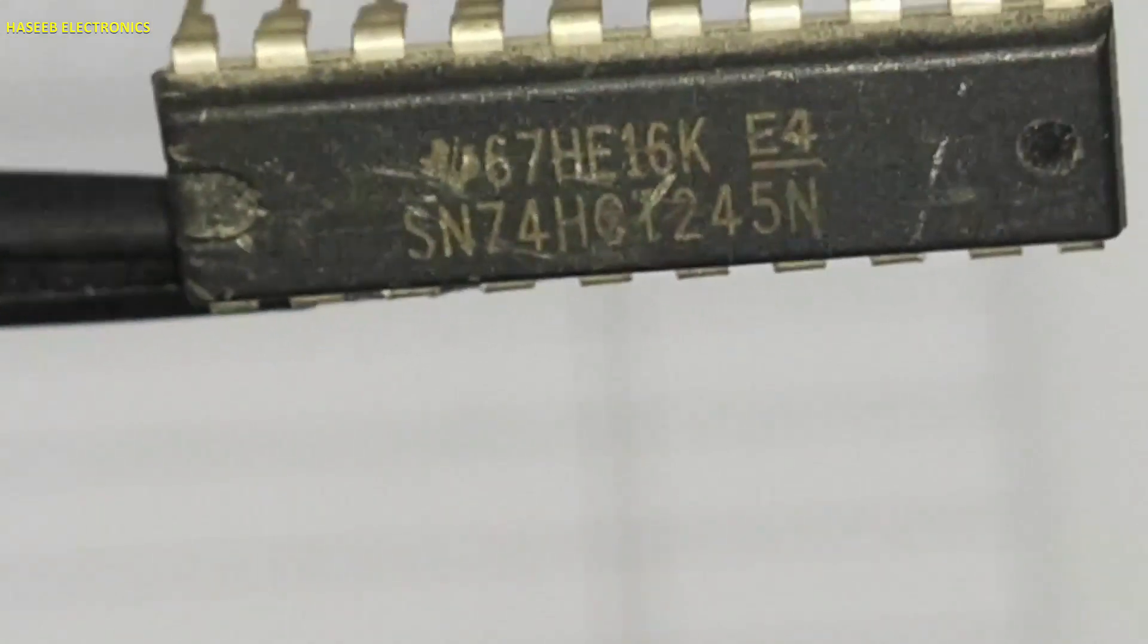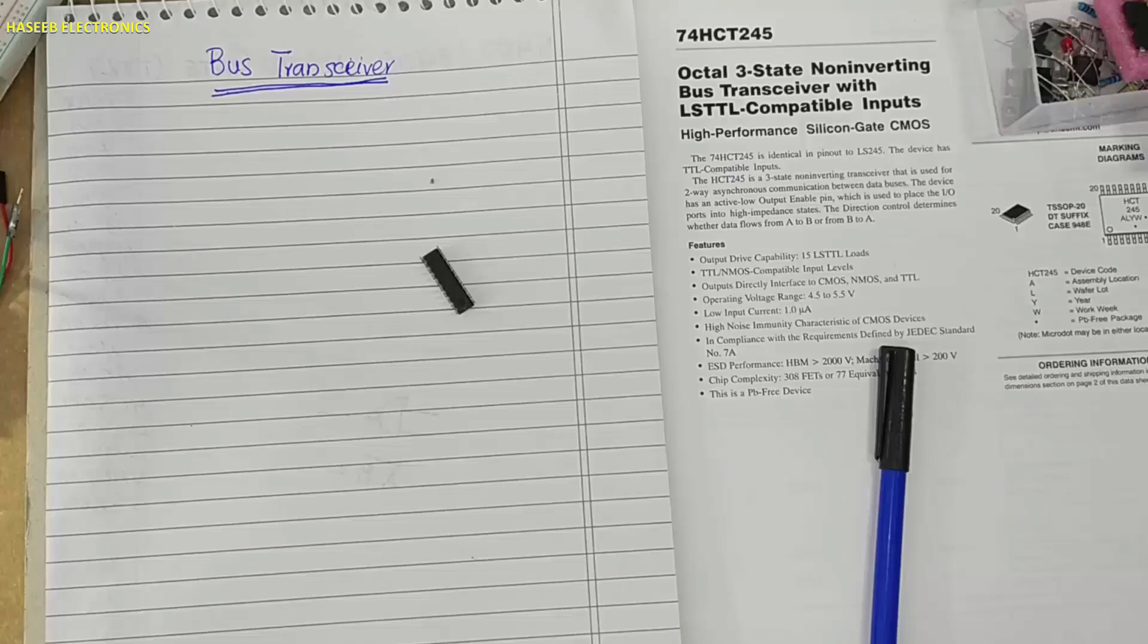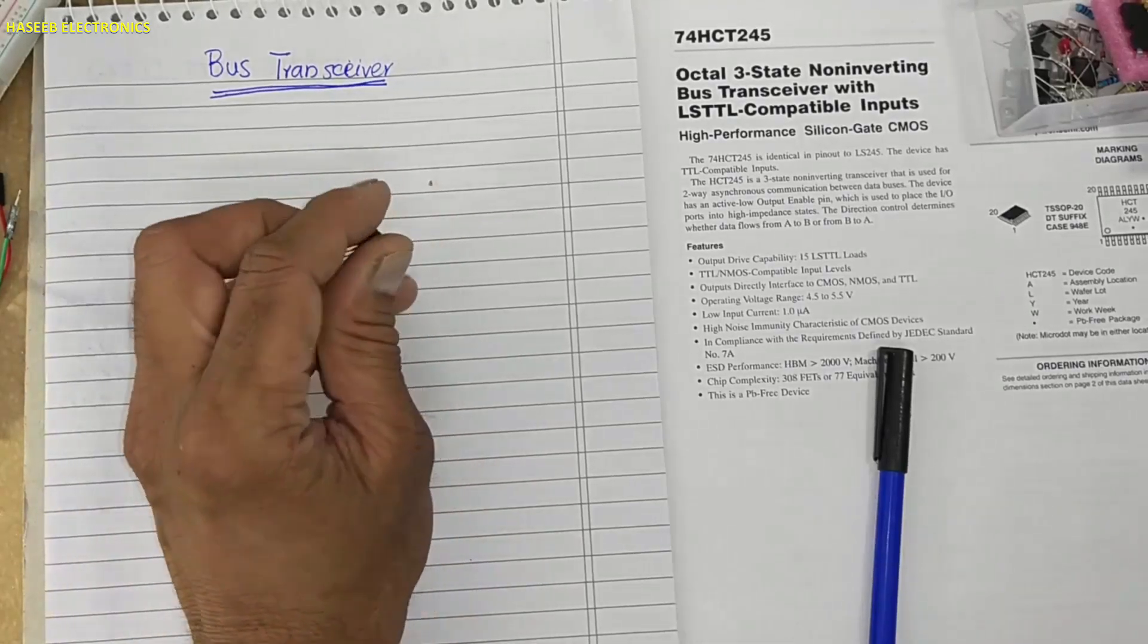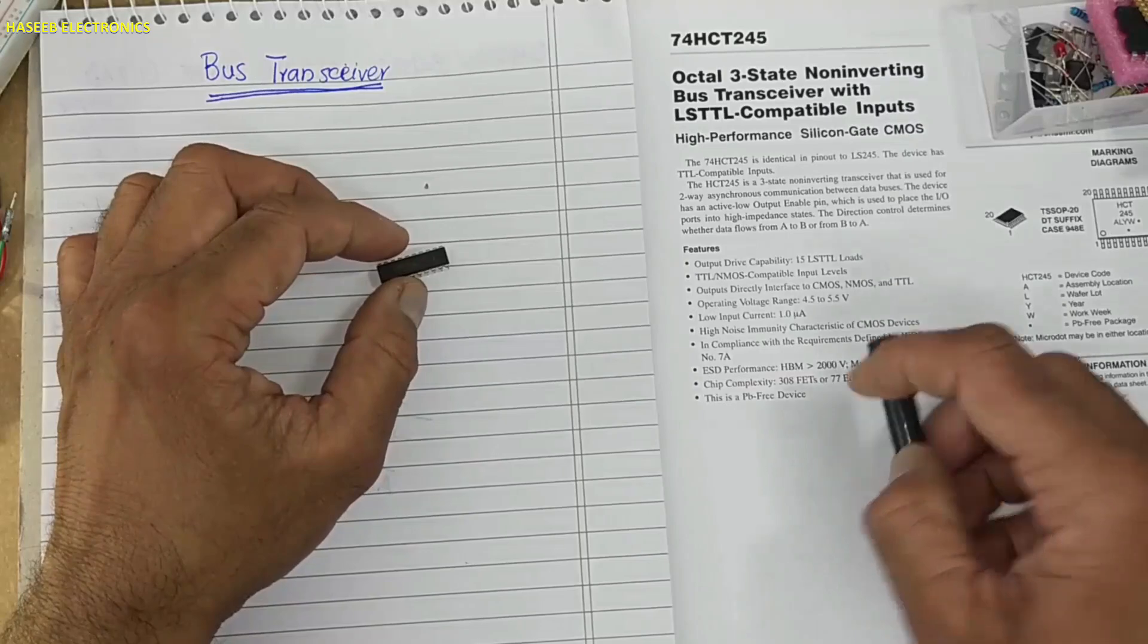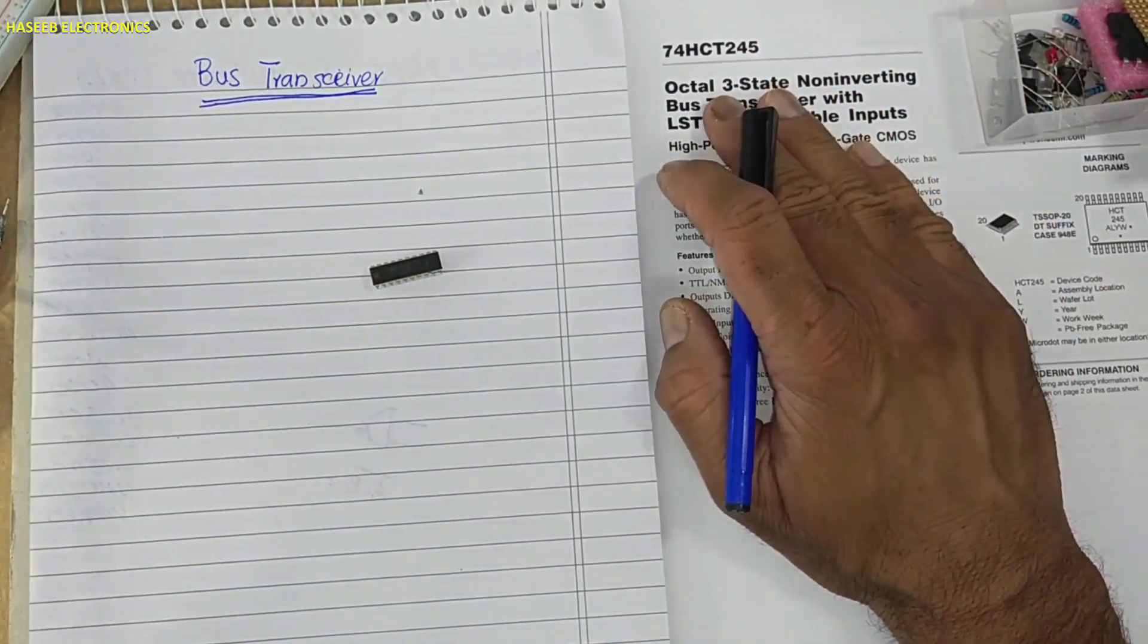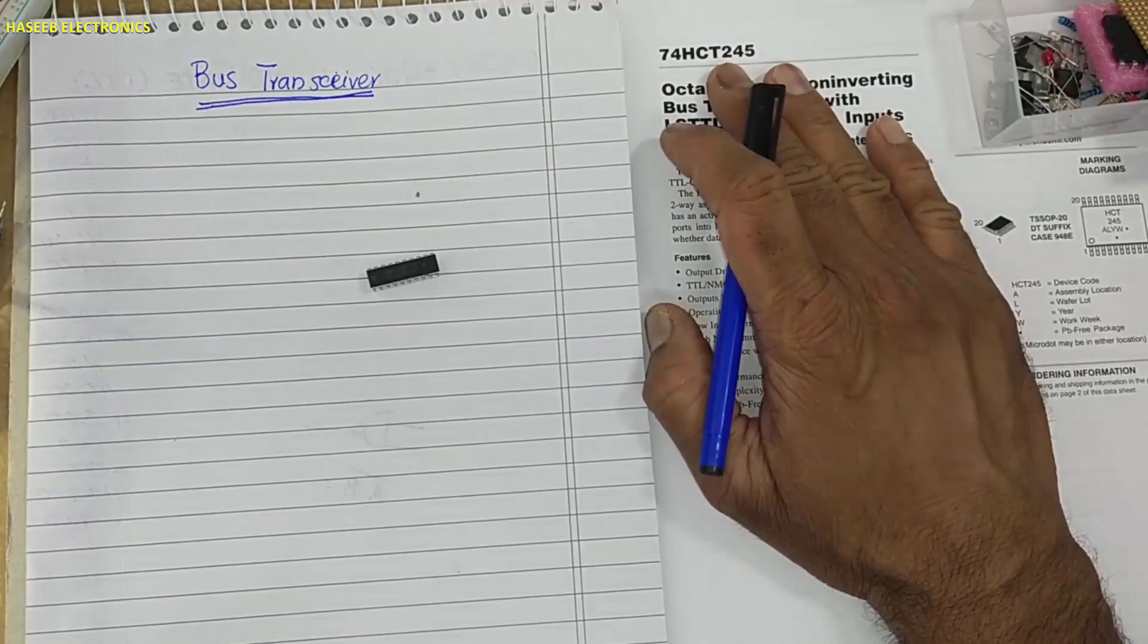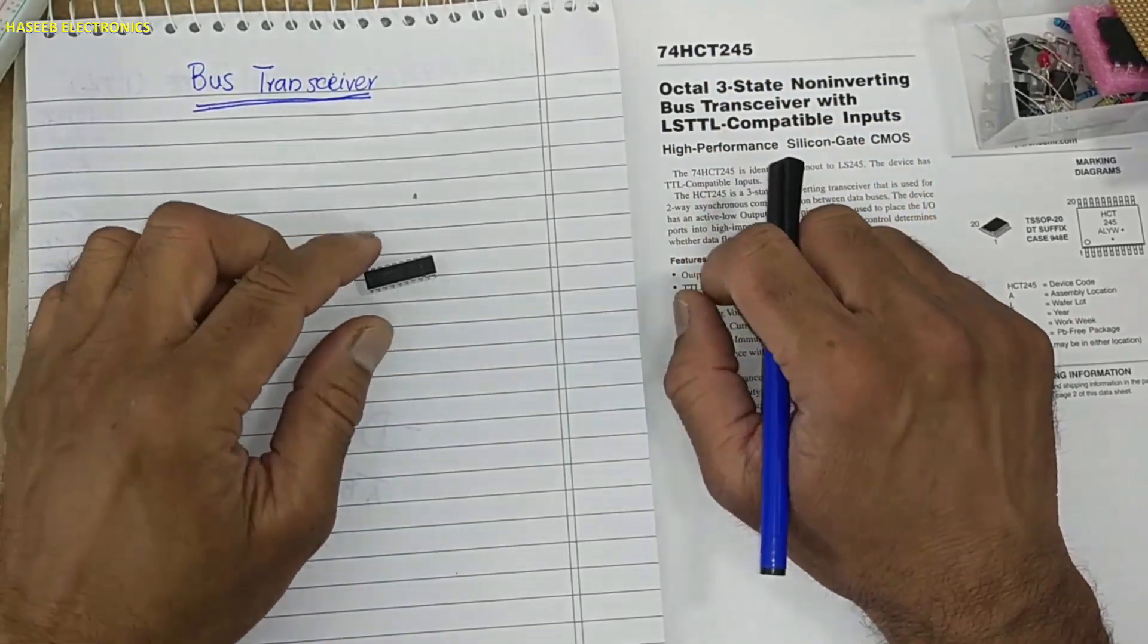Welcome back to my channel. In this session we are discussing 74HCT245, LS245, S245, 74245, F245. These all are similar numbers, just only the driving current and access time difference. These are transceivers.